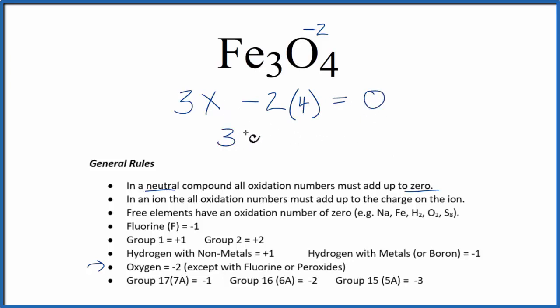So we end up with 3x equals 8. So x equals 8 over 3. So the oxidation number on each Fe atom here, in Fe3O4, is 8 over 3. And that is a positive number.